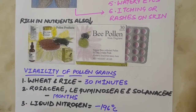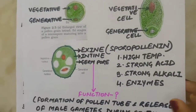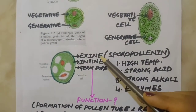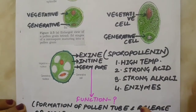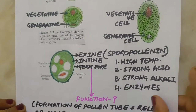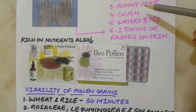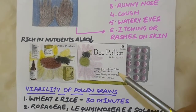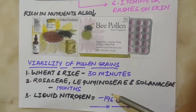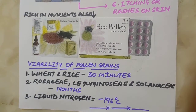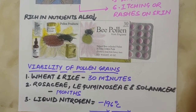So what we have learnt today is the structure of pollen grains: the two layers — exine and intine — the two cells — vegetative and generative — pollen allergy and their symptoms, pollen as a nutrient, and viability of pollen grains. That covers everything related to stamen, microsporogenesis and pollen grains.